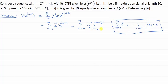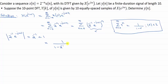For us, R equals 2 to the minus 1 times e to the minus j Omega. The absolute value of R is simply 2 to the minus 1, which is less than 1, so we can use the geometric series formula. The DTFT of X(N) equals 1 over 1 minus 2 to the minus 1 times e to the minus j Omega. That's the first part of the problem.